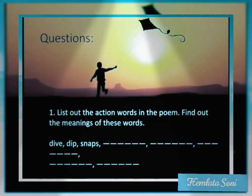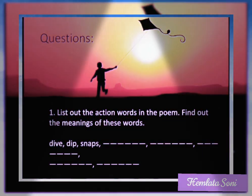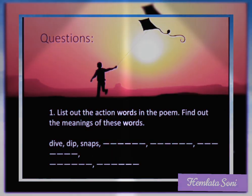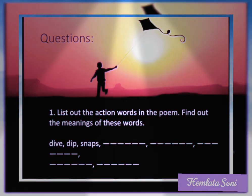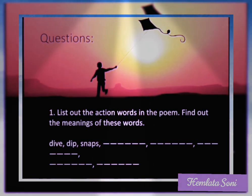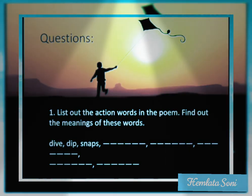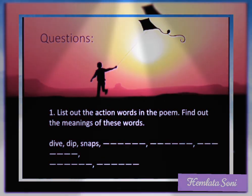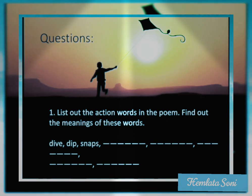Here are the questions from your textbook. List the action words in the poem and find out the meanings of these words: dive, dip, snaps. You also have to write some other action words of the kite when it goes high in the air and write their meanings.